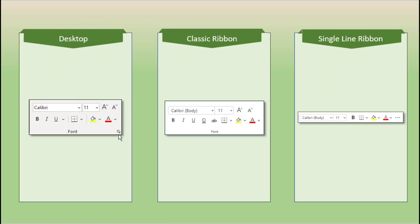The dialog box launcher gives us even more choices than we will see on the ribbon, and this harkens back to the early days of Excel and how people originally needed to find the different formatting options. But they still exist here. We would find other things like superscript or subscript with this dialog box launcher — but again, that is not a possibility with the classic ribbon. As we look at the single line ribbon, we have bold, and well, that's kind of it at least as an option to begin with.